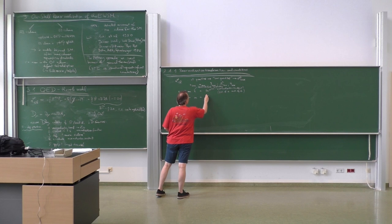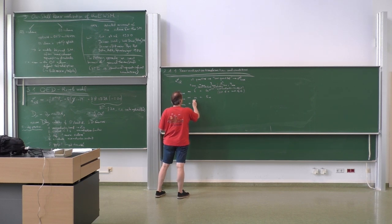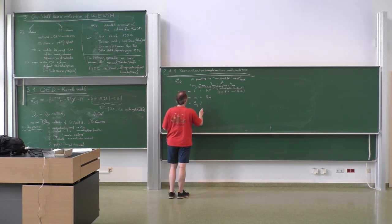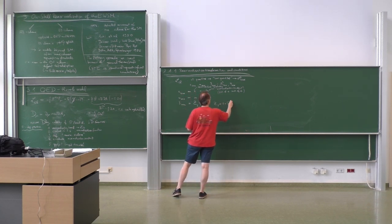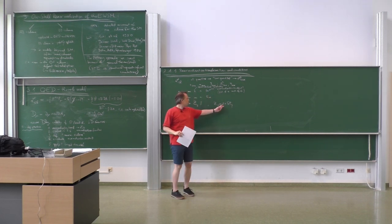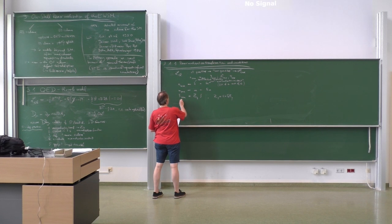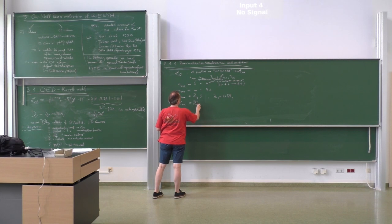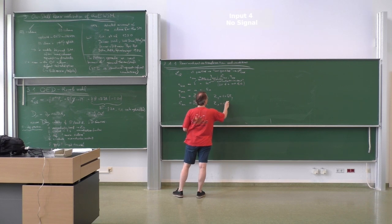The bare gauge parameter xi_bare is given by Z_xi times xi, where Z_xi equals 1 plus delta Z_xi. The properties are similar for E and M. For the fields, A^mu_bare is given by square root of Z_A times A^mu (the renormalized field), where Z_A equals 1 plus delta Z_A. For the electron field, psi_bare is given by square root of Z_psi times psi, where Z_psi equals 1 plus delta Z_psi.